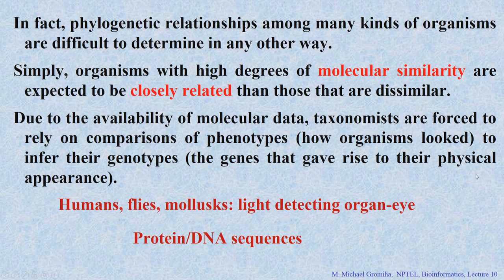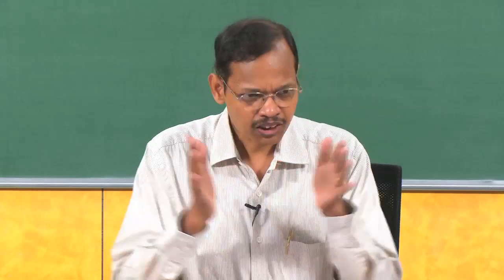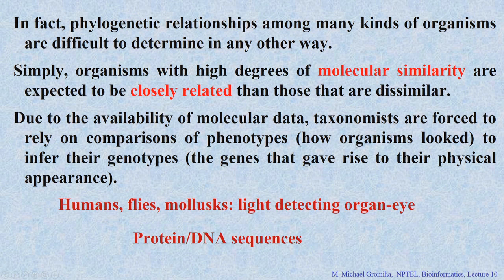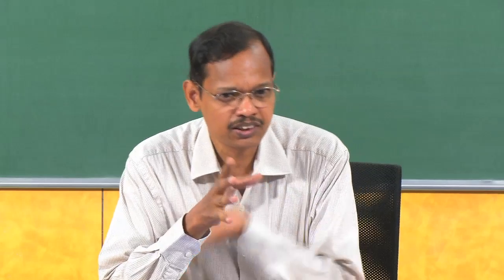We see organisms with high similarity as closely related. The ones which are closely related are put nearby each other in the tree. Due to the availability of data, taxonomists started to construct trees, relying on comparison of phenotypes — how the organisms look like — and inferred genotypes. In the family tree example, you can look at how they look and try to compare: if these two are similar to each other, then try to group them.